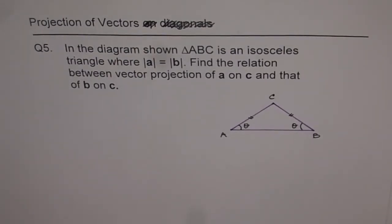Here is question number 5 on projection of vectors. In the diagram shown, triangle ABC is an isosceles triangle where magnitude of A equals to magnitude of B. Find the relation between vector projection of A on C and that of B on C.